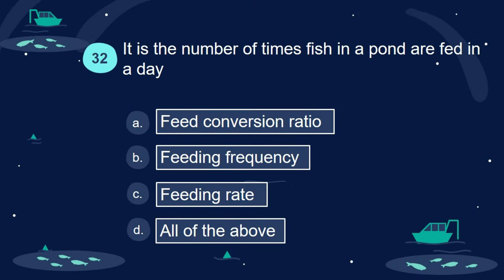Question 32. It is the number of times fish in a pond are fed in a day: A. Feed conversion ratio. B. Feeding frequency. C. Feeding rate. D. All of the above.